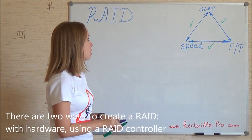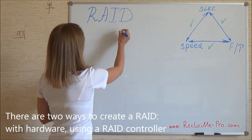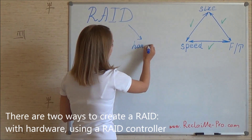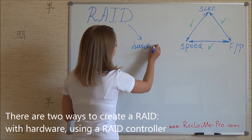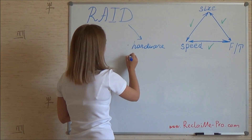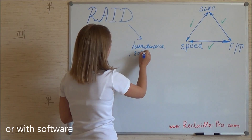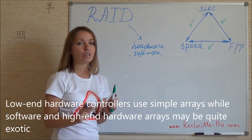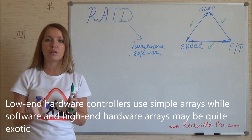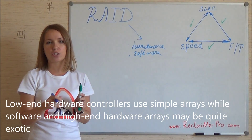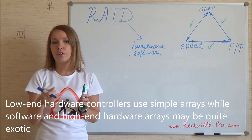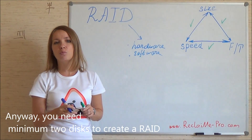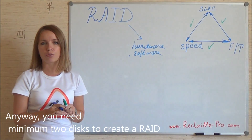There are two ways to create a RAID: with hardware using a special RAID controller, or with software. Low-end hardware controllers use simple arrays while software and high-end hardware arrays may be quite exotic. You need a minimum of two disks to create a RAID.